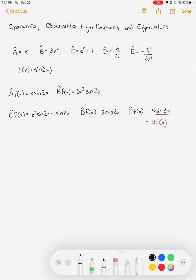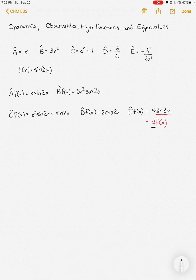This is a special kind of function and operator relationship. So this function, in this case sine of 2x, is said to be an eigenfunction of our operator E. And this 4 that comes out, this constant that comes out, is the eigenvalue.